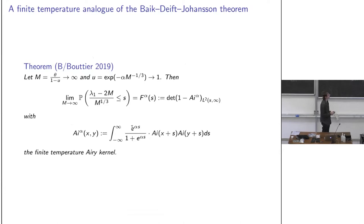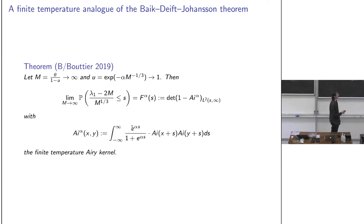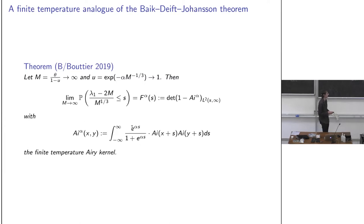As u → 1, you must take u = 1 - 1/m with m → ∞, where m = θ/(1-u), so θ must be of order m^{2/3}. The same scaling as BDJ appears, but the limiting distribution is now F_α — a Fredholm determinant of the finite-temperature Airy operator — which is different from Tracy-Widom.